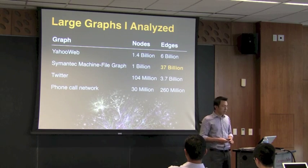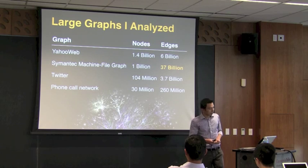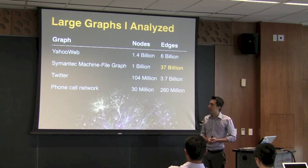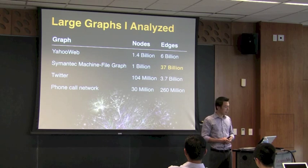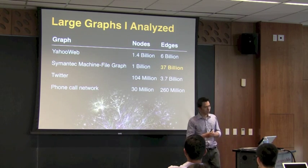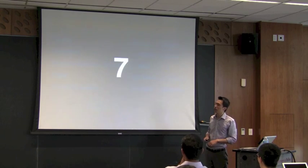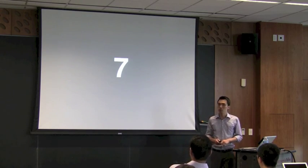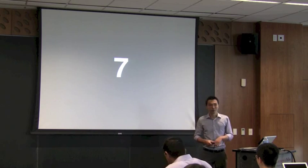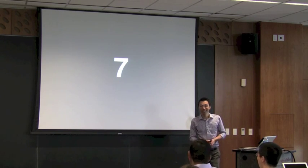Having all these large graphs and big data seems great and provides many opportunities. But are there challenges as well? I would say yes, and I would argue that the most fundamental one comes down to a single number: number 7. Does anyone in the audience know the significance of it?